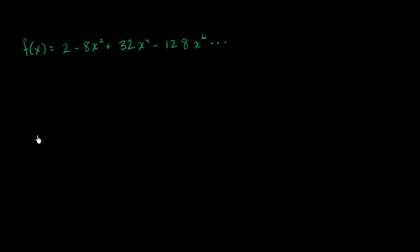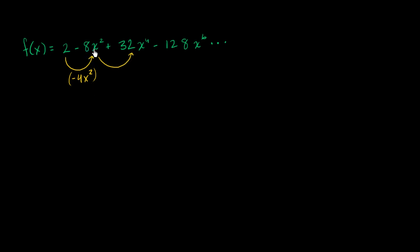The telltale pattern of a geometric series is when you go from one term to the next, you're multiplying by a common ratio. To go from 2 to negative 8x squared, you have to multiply by negative 4x squared. Then, negative 4x squared times negative 8x squared gives positive 32x to the fourth. Multiplying by negative 4x squared again gives negative 128x to the sixth. So the common ratio is negative 4x squared.